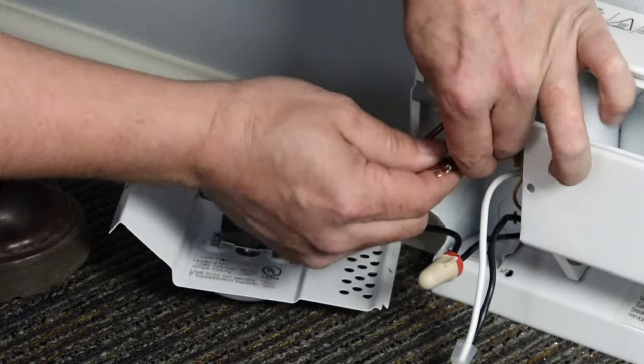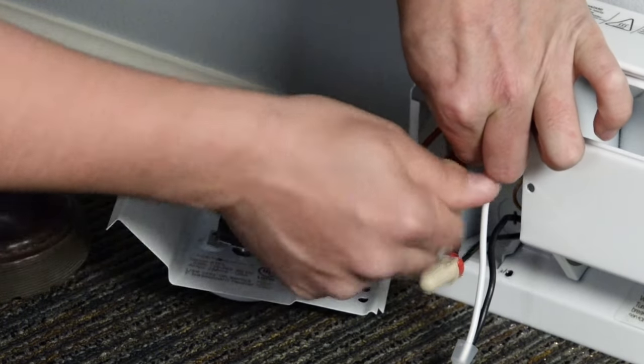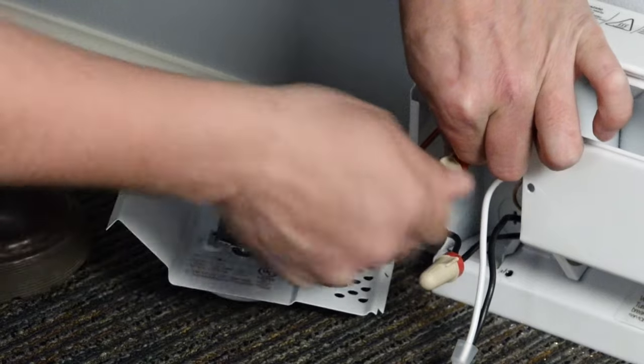Connect the white supply wire and the black baseboard wire with a wire nut. After you secure the wire nut, pull on it a little to make sure it's secure.